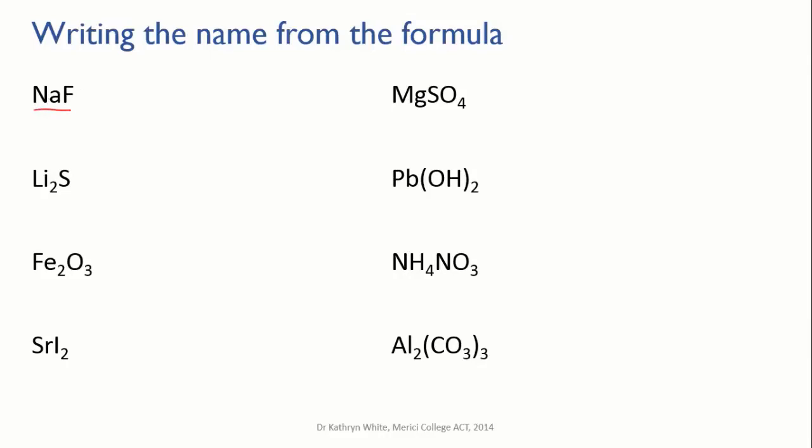Our first example, NaF, is made from sodium and fluorine. The positive metal ion comes first and has the same name as the original element. The negative non-metal ion comes next, and we replace the end of the name with -ide. So instead of fluorine, we have fluoride. The name of this compound is sodium fluoride.